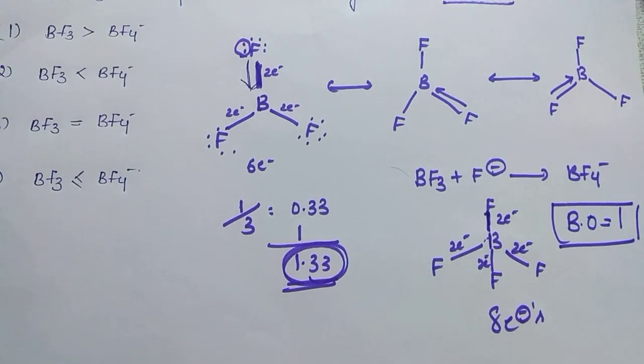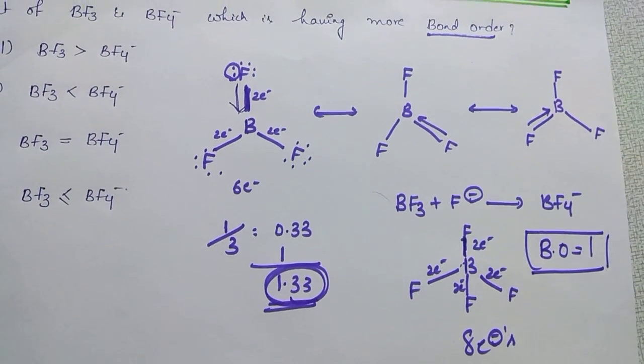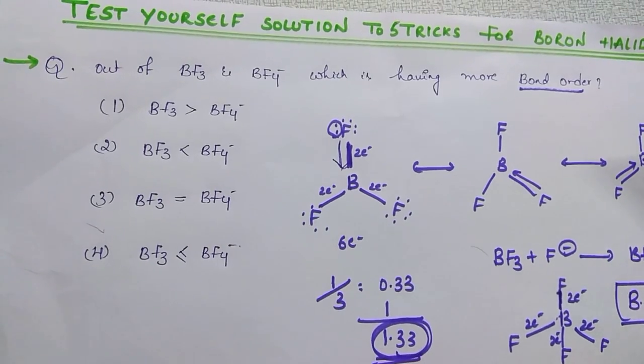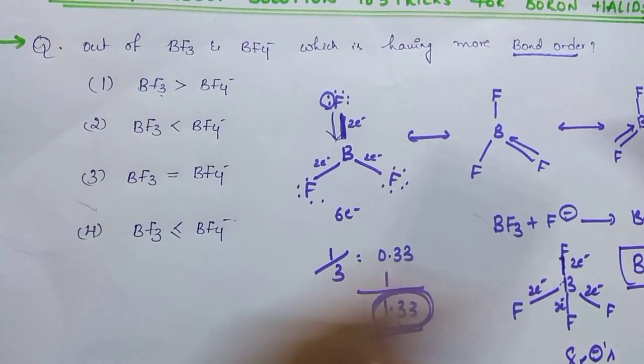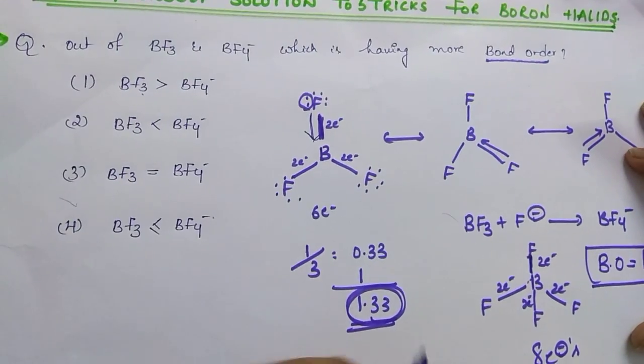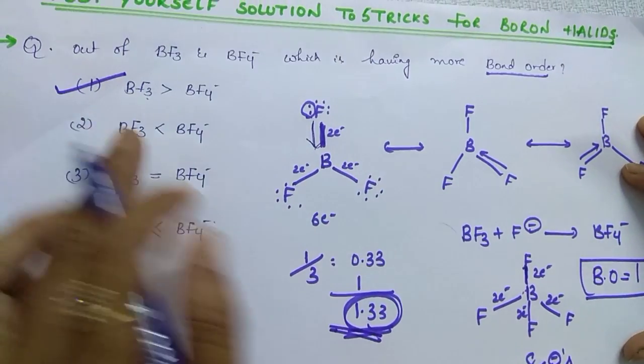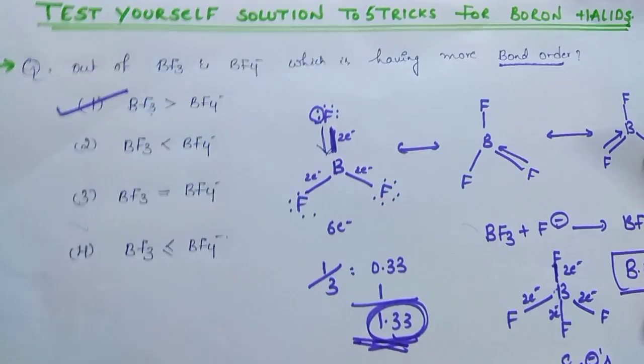Few, they commented the answer. That is the correct answer. Bond order is 1.33 in BF3 and BF4 minus, it is 1. So which is having more bond order? BF3 is having more bond order due to back bonding. This is the answer.